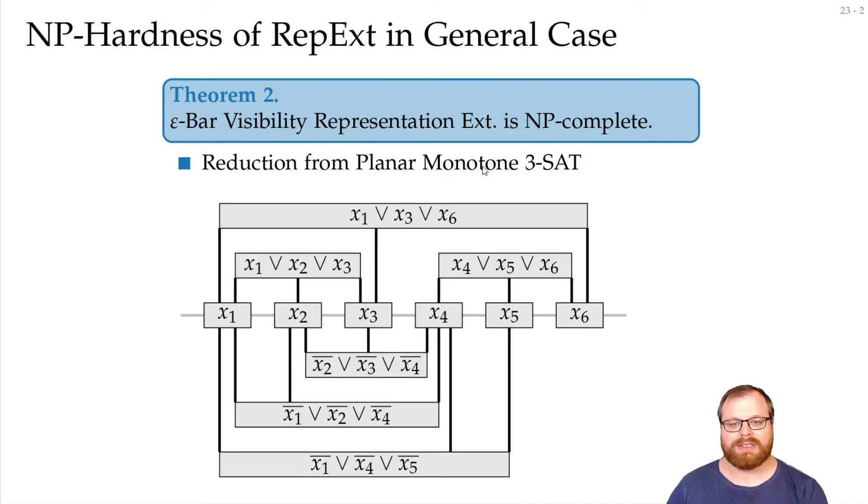And this is still NP-hard. And monotone is even stronger. There, we can draw all the vertices on a horizontal line. Above that, we have only clauses that contain only positive literals. And below, we have only clauses that contain only negative literals. So this is a very restricted version of 3-SAT, but this is still NP-hard.